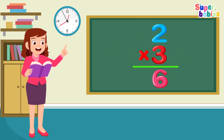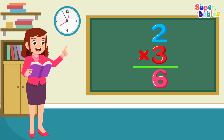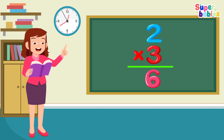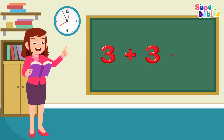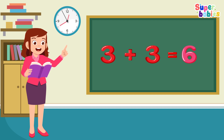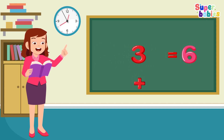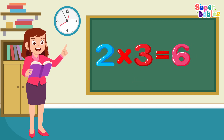Two times three equals six. Two, three equals six. One, two, three equals six. Two times three equals six.